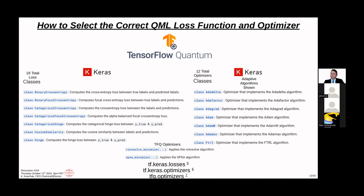Moving into TensorFlow Quantum: when I first started, I was able to get these to run in one click in Colab, but now there may be a Python 3.9 issue. On GitHub, there are a fair number of active contributors to TensorFlow Quantum. You just need to get over the first hurdle if things have broken. Basically, TensorFlow Quantum has little in the form of its own optimizers — just two — but you build off of Keras: 19 total loss classes and 12 total optimizers.